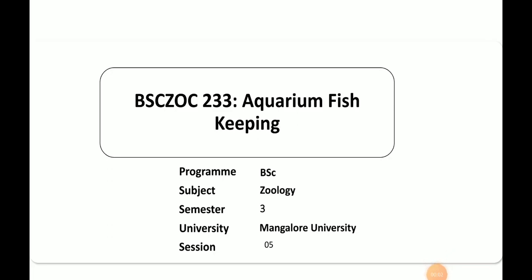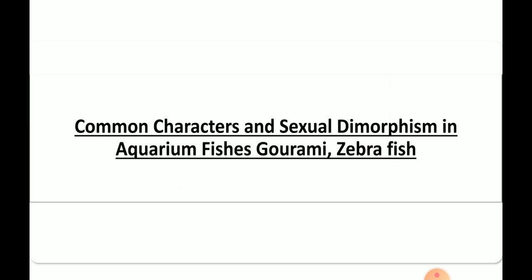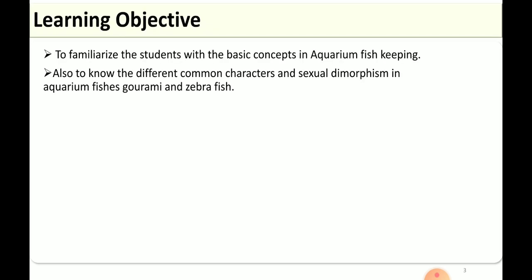Hello everyone. In this session we are going to discuss the elective paper for second year BSc students, that is aquarium fish keeping. This session consists of common characteristics and sexual dimorphism of aquarium fishes — mainly gourami and zebrafish. This is the objective of this session.